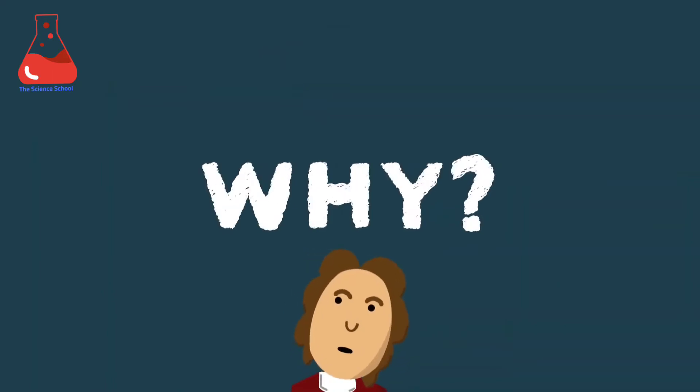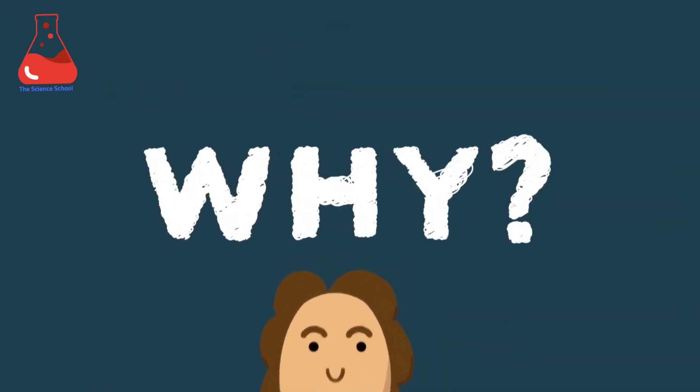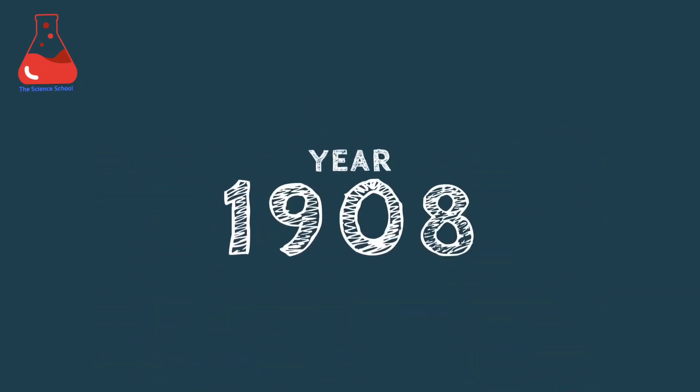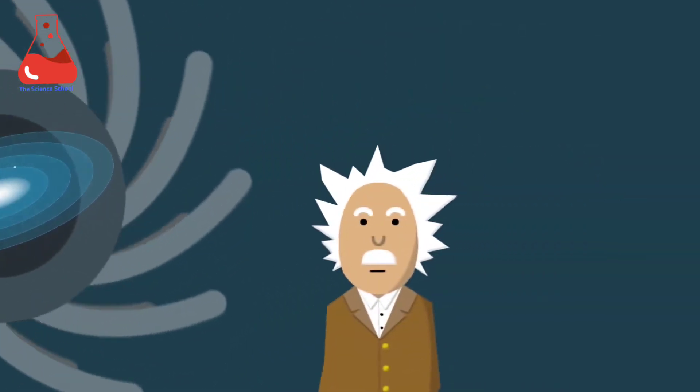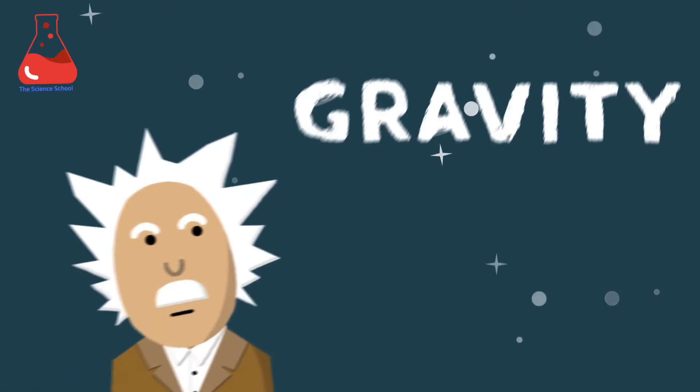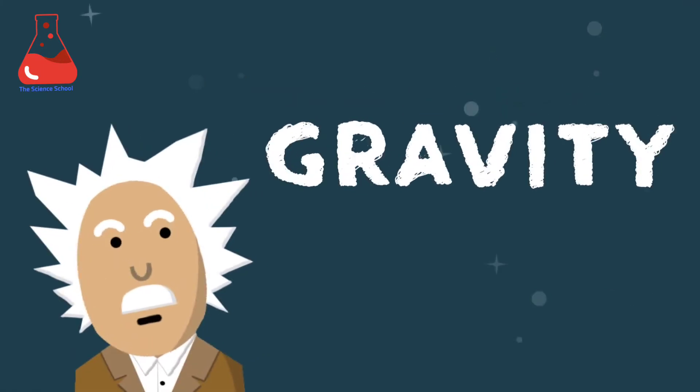Why? Why doesn't the moon fall on Earth? A question even Newton couldn't answer. So let's jump to the year 1908. A young German physicist named Einstein looked at it and knew that our understanding of gravity is not complete yet.